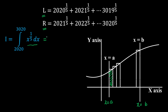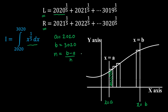The starting value a is 2020 and the ending value b is 3020. The number of strips is (b - a) / h, where h is the width of each individual rectangle. So h is the width of each strip.